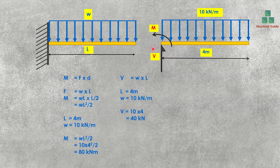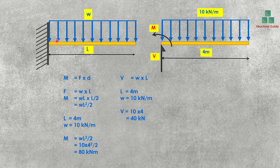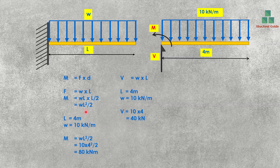The maximum bending moment and shear force will be at the support. The moment equals force into distance. For UDL, the total force is W multiplied by L, and it acts at the mid-span, so the distance to the centroid is L/2. Therefore the bending moment at the support is WL²/2. Substituting our values: W = 10 kN/m, L = 4 m, so the bending moment is 10 × 4² / 2 = 80 kNm.